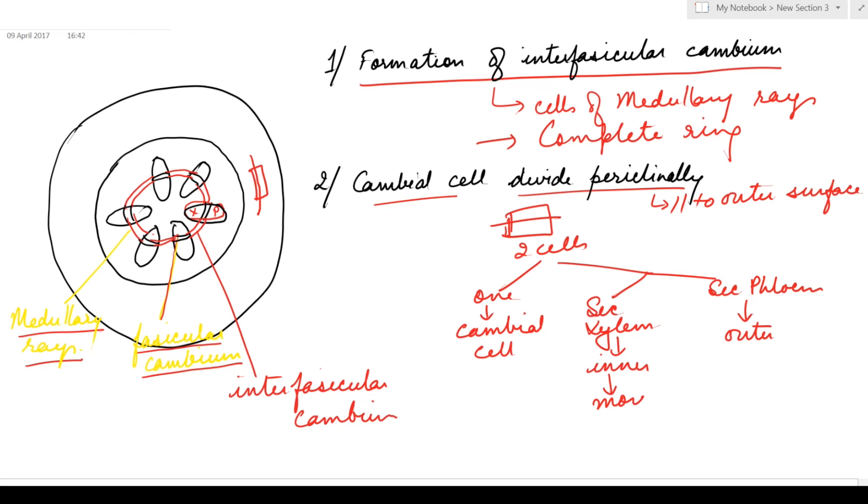More of secondary xylem and less of secondary phloem is formed. Due to the formation of secondary xylem and secondary phloem, the primary xylem and primary phloem get crushed.